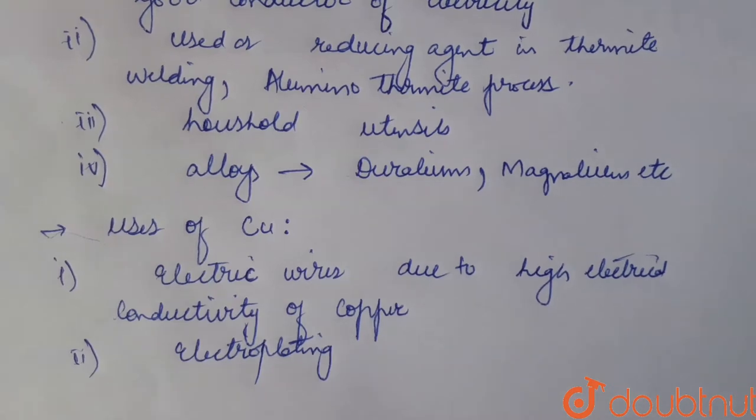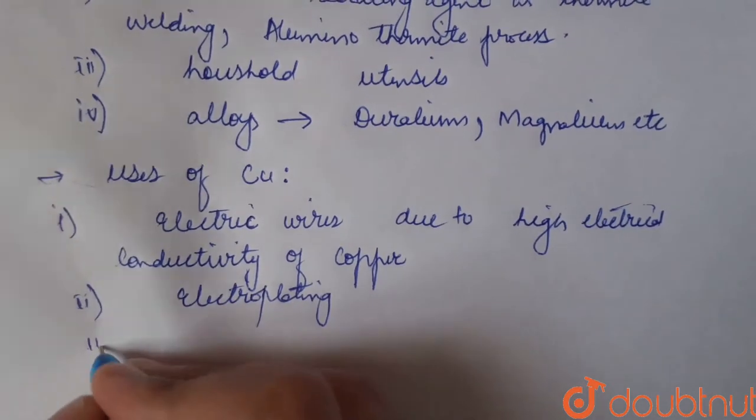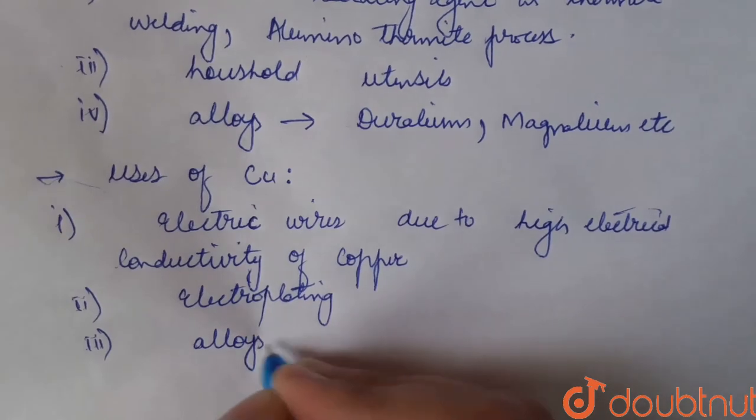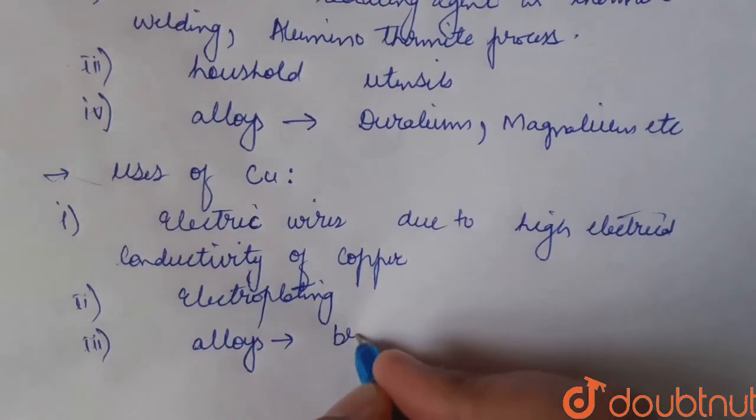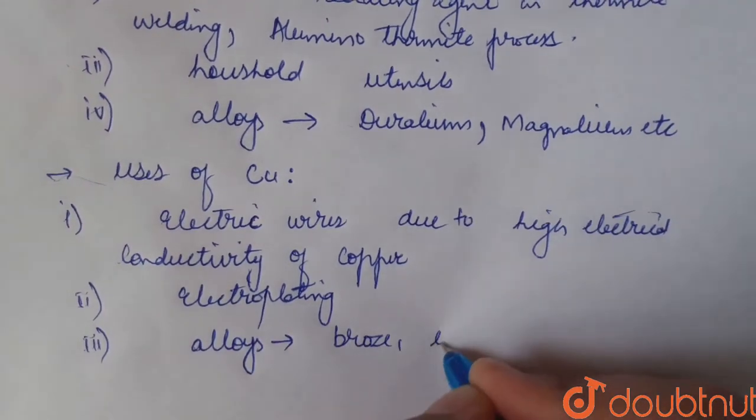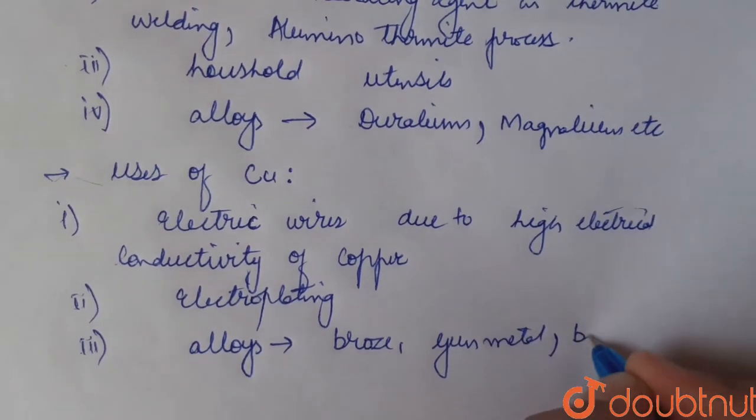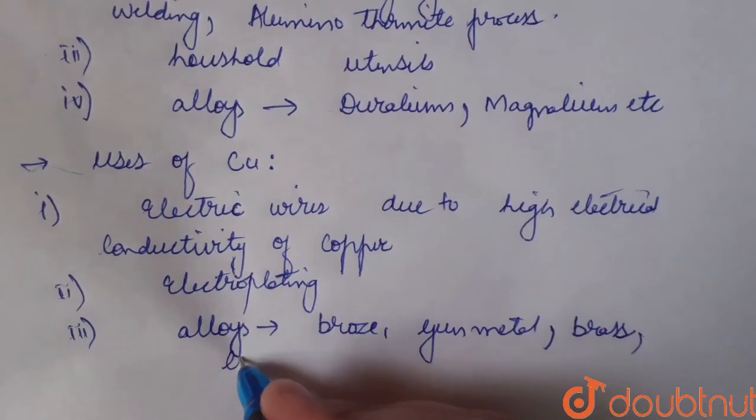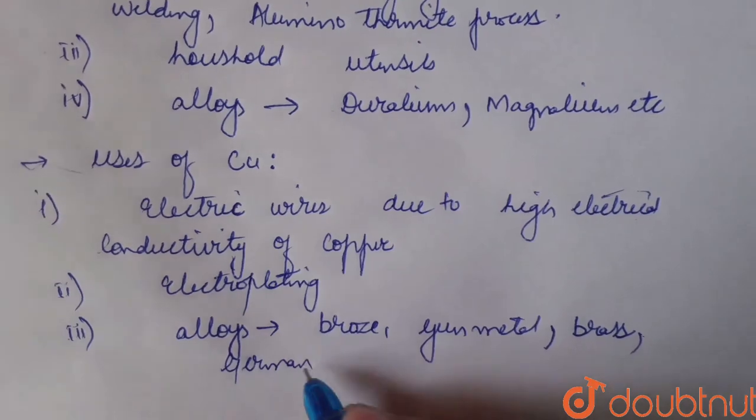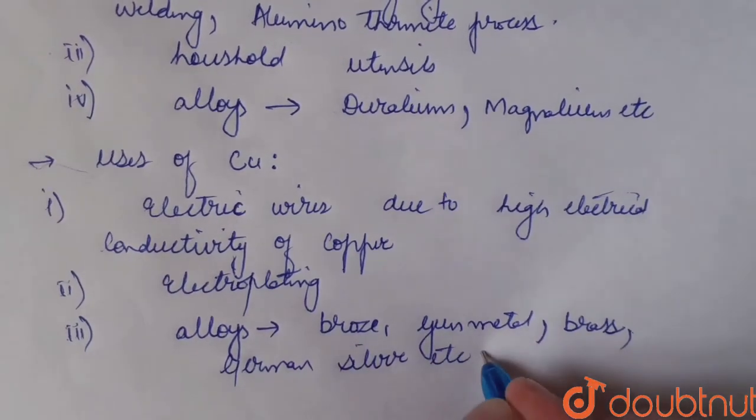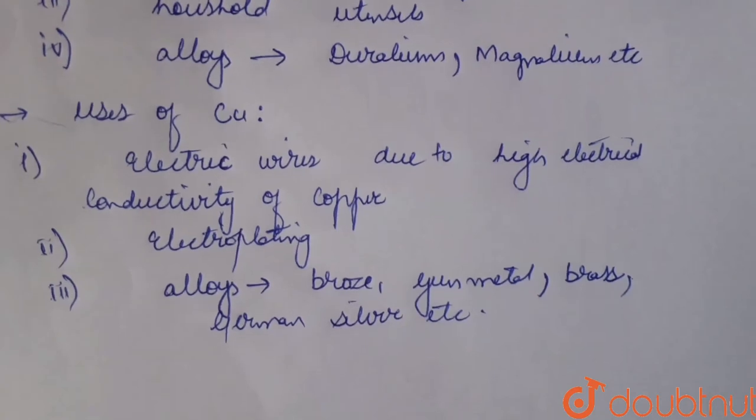It's used for the manufacture of certain alloys. Common alloys of copper include bronze, gun metal, brass, german silver, etc.